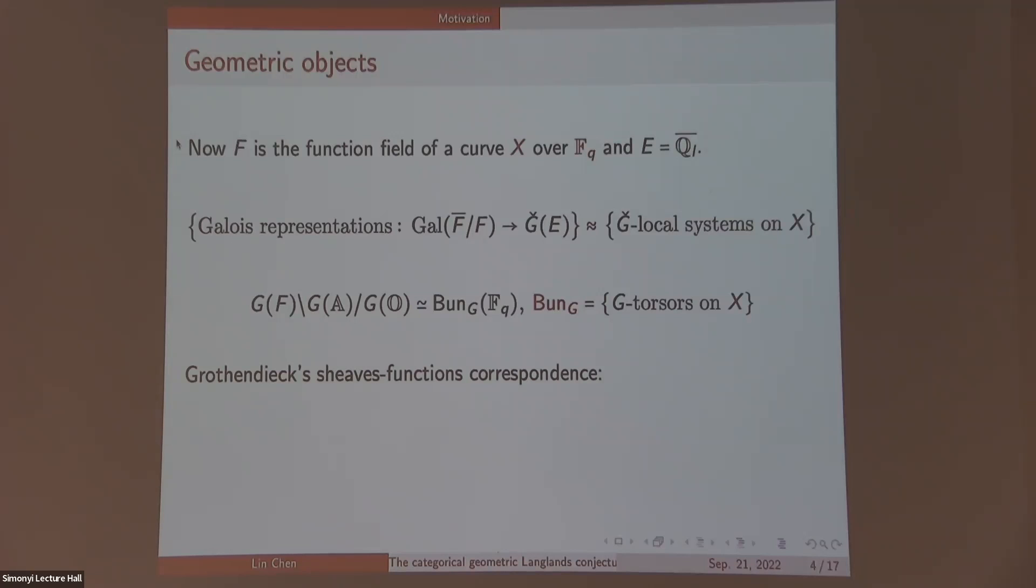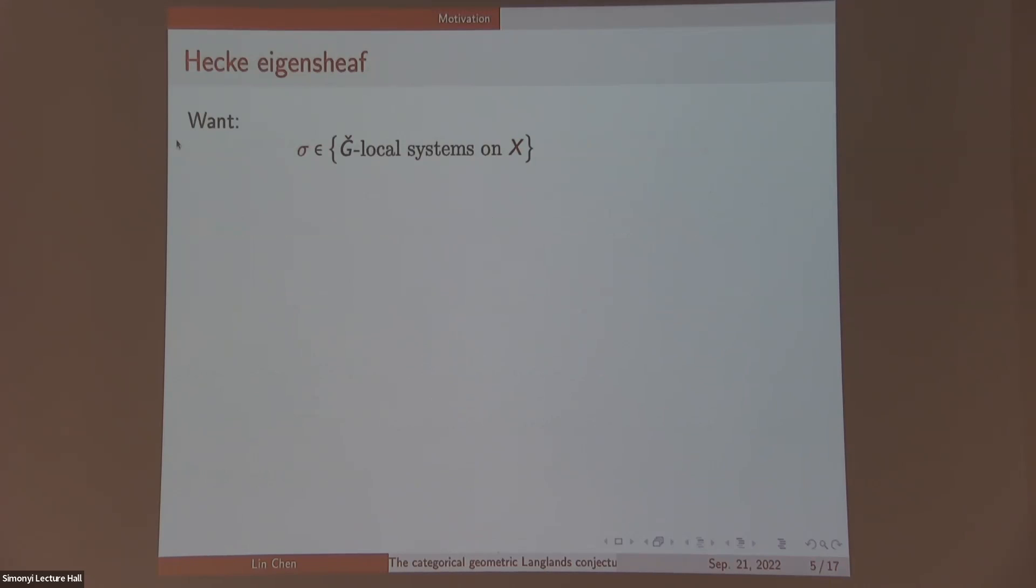Now we use the Grothendieck sheaf-function correspondence to translate to sheaves on Bun_G. Roughly speaking, this correspondence says there's a correspondence between functions on F_q points of Bun_G to sheaves on Bun_G, but you need to understand the notion of sheaves correctly. It's not just constructible, it's actually l-adic sheaves. This correspondence is given by taking Frobenius, taking trace of Frobenius action on the fiber on the stalk of your sheaves.